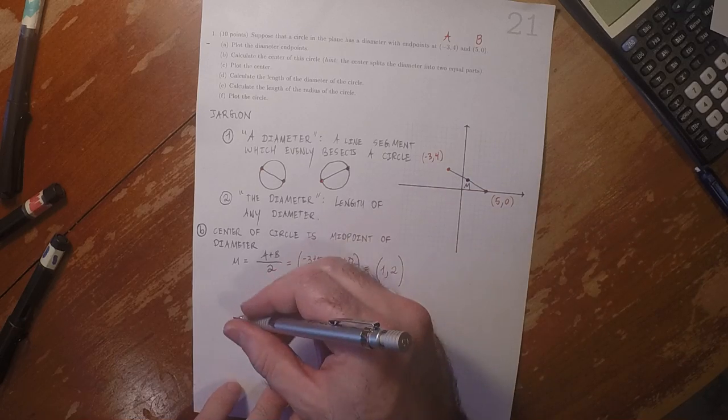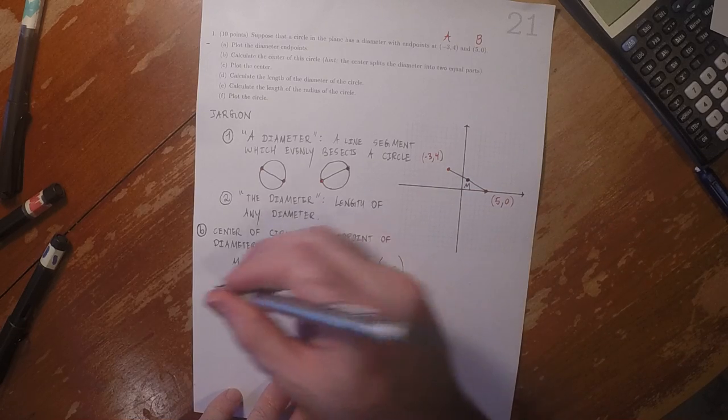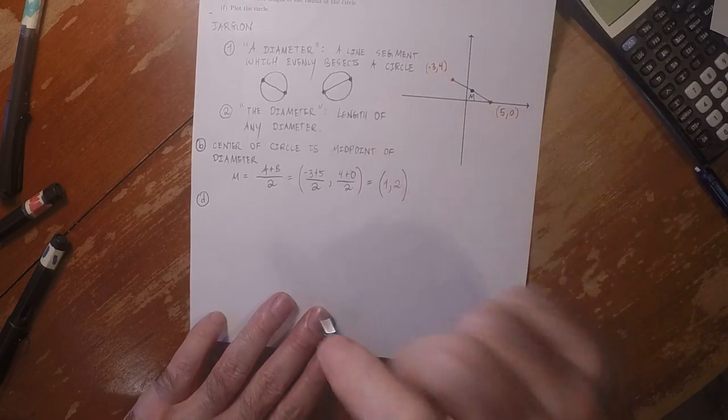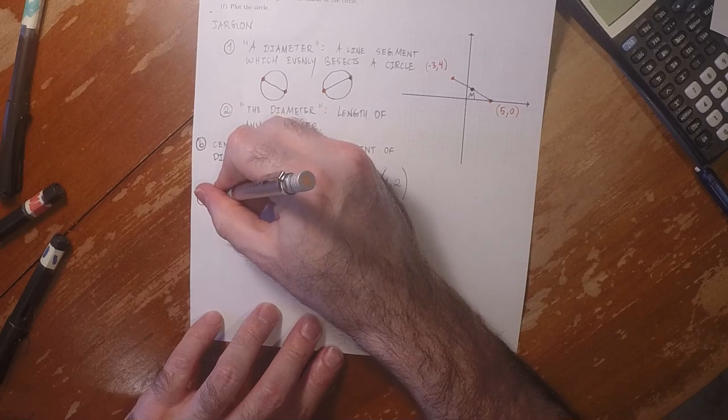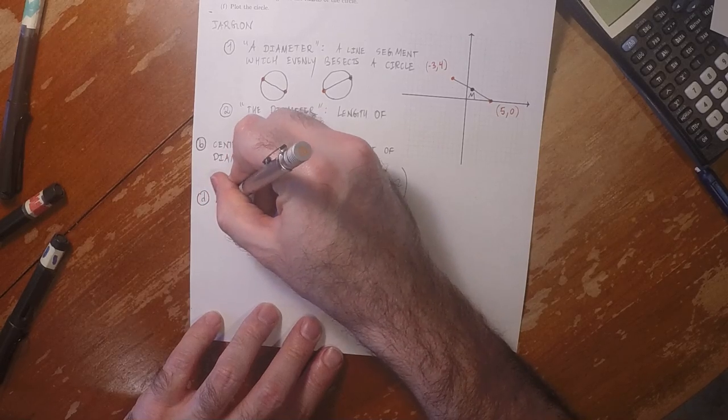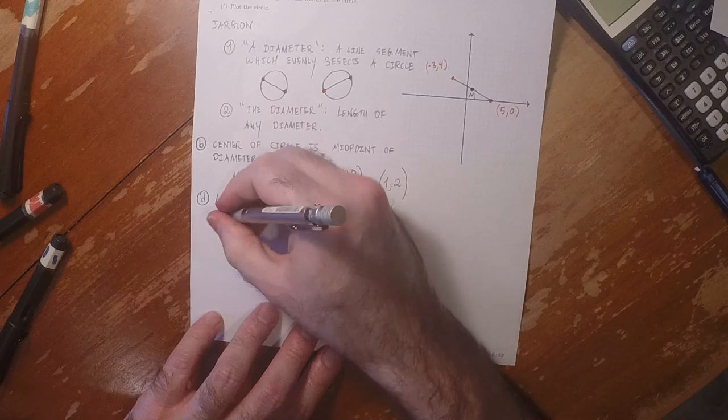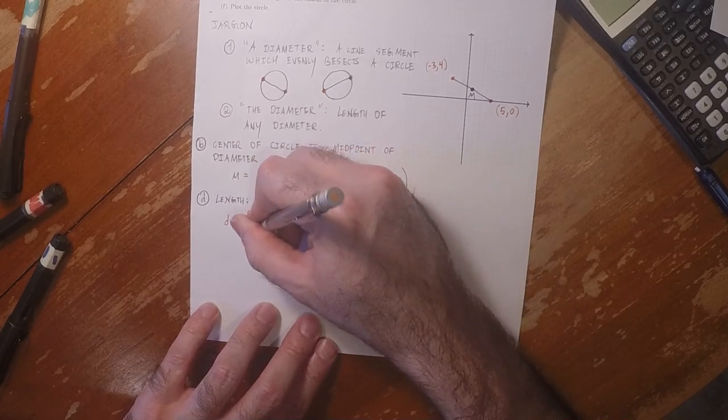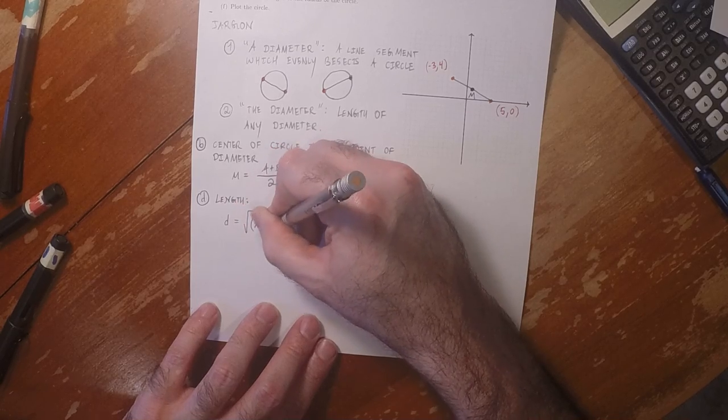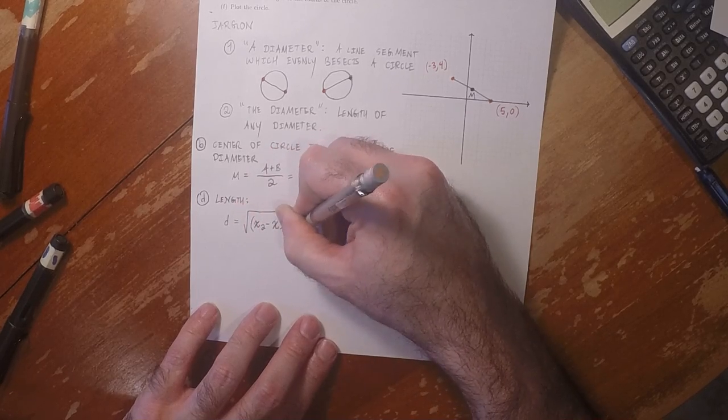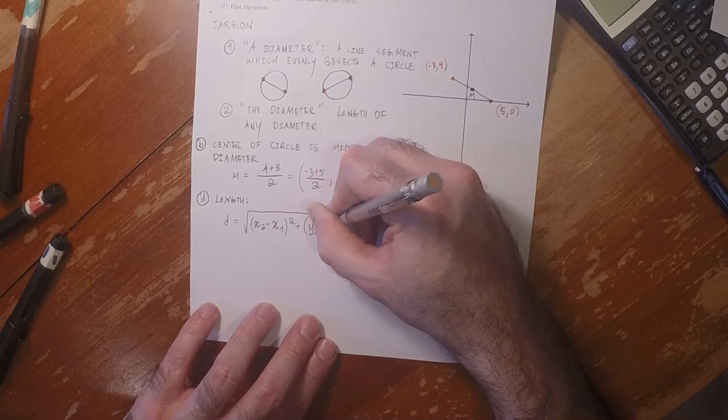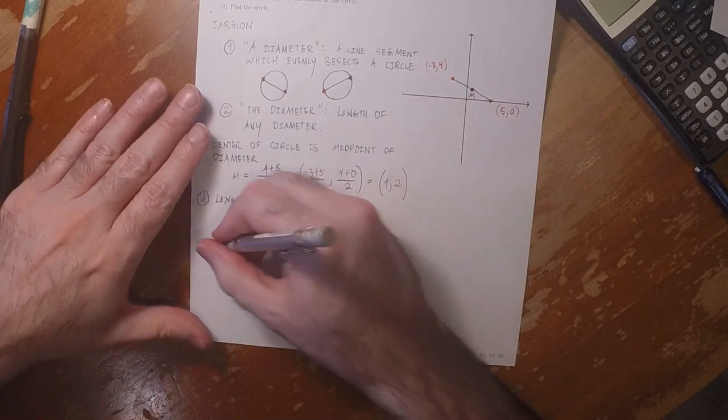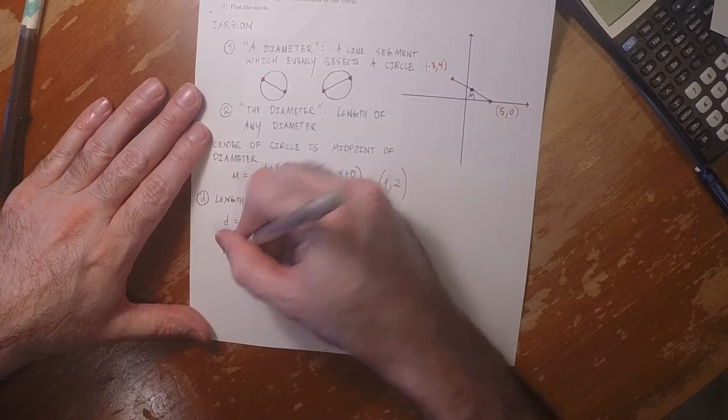Okay, so that is C. Part D is calculate length. Well, the length will be D equals square root, the difference in the x's squared plus the difference in the y's squared.